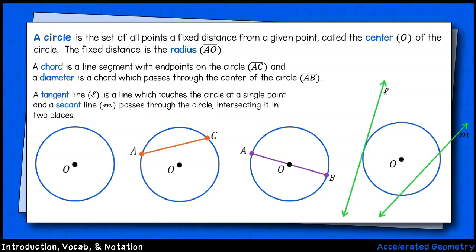Finally, we have a second green line labeled M, which is referred to as a secant line. This line passes through the circle, intersecting it exactly twice.